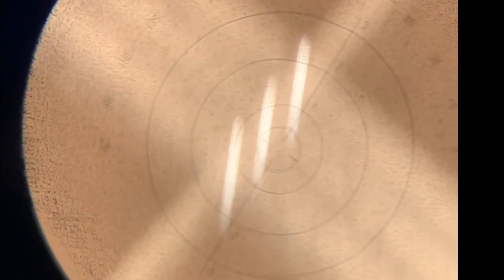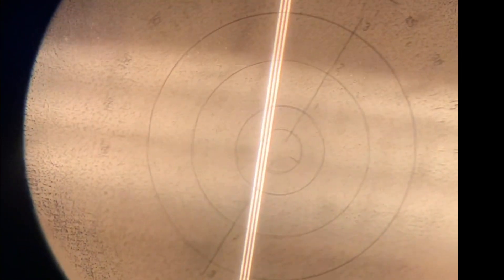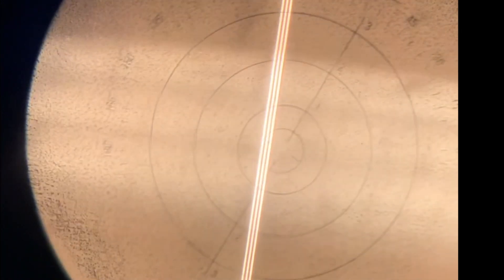To ensure we are reading a lens in plus cylinder, we want to find our sphere lines first and then add power to find our cylinder lines. This ensures we are reading the lens in plus cylinder.